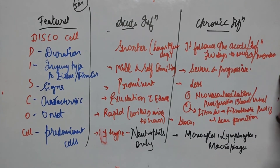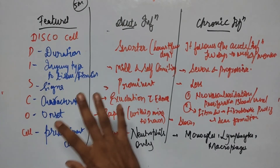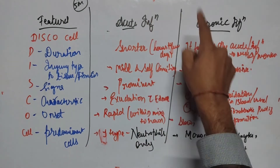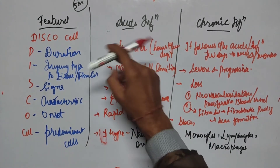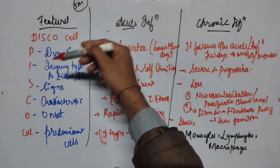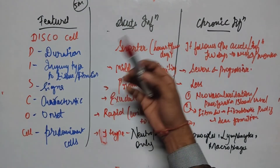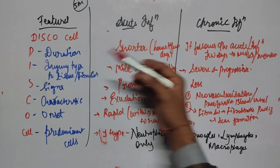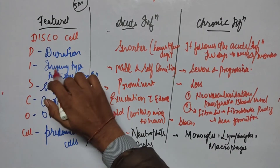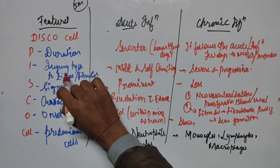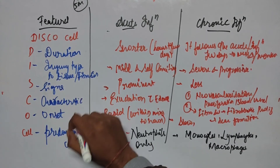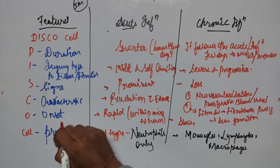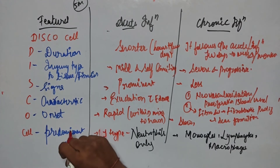To summarize the differences between acute and chronic inflammation using the mnemonic DISCO CELL: D = Duration, I = Injury type to the tissue, S = Signs, C = Characteristic features, O = Onset, and CELL = Predominant cell.